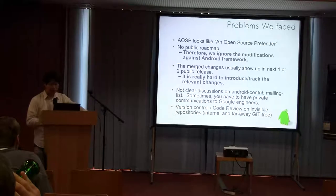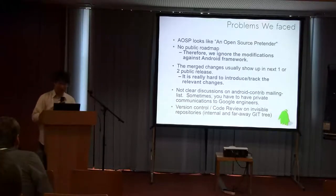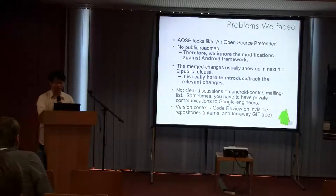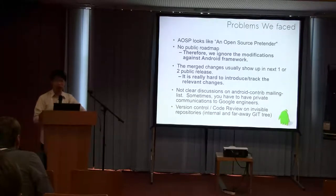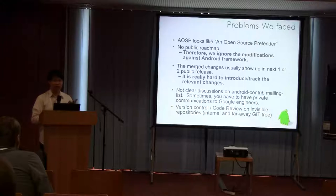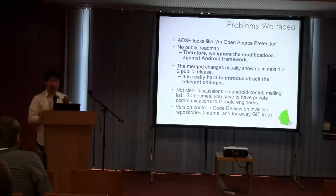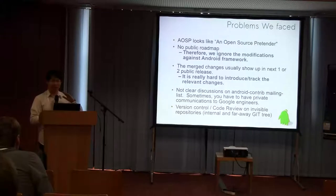In my opinion, AOSP is an open source pretender. There is no public roadmap for Android. So our team made a decision to ignore modifications to the Android framework, because we have no idea about it. Most of our changes are against Bionic C library, and some other libraries like Skia. We never contribute to the framework because we already have some painful experience with that.